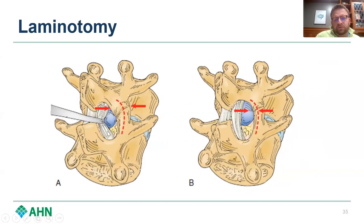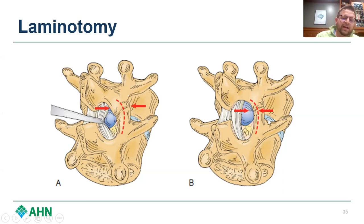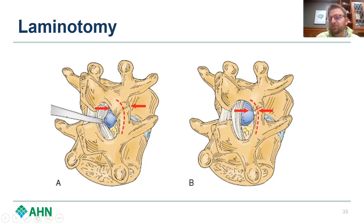Looking here at an oblique view — the picture on the left shows a relatively small laminotomy, and with a big disc herniation, we're really pulling on the thecal sac to reach it. Removing a little more bone still requires thecal sac retraction, but now we can easily get that disc herniation. It's a Goldilocks situation — not too small, not too big. You want it to be just the right size.